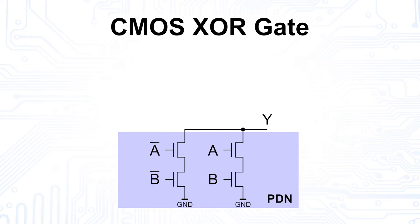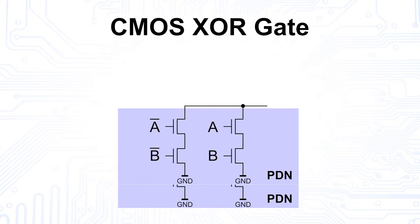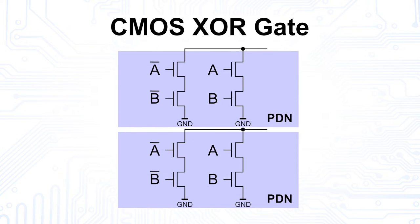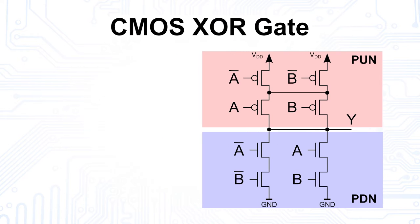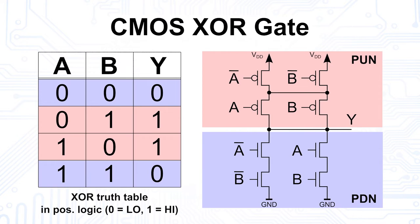For the pull-up network, we apply the same procedure as in the previous example. Serial connections turn into parallel ones and vice versa. Take your time to prove the functionality of the pull-up network again. Are all states in the truth table defined correctly?